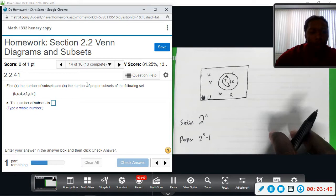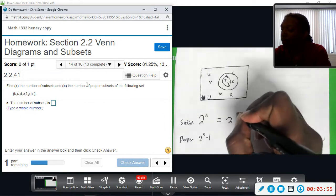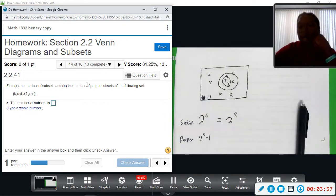So we have 1, 2, 3, 4, 5, 6, 7, 8 elements. Now, there is a table in the book because 2 to the 8 gets to be pretty large. So let me go to the text and show you that real quick.